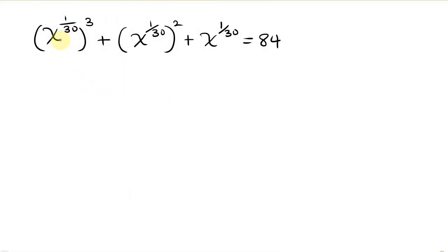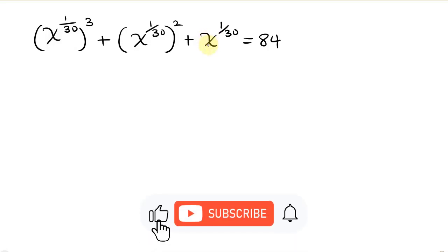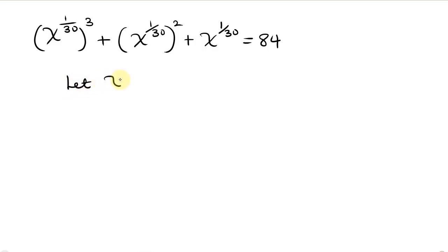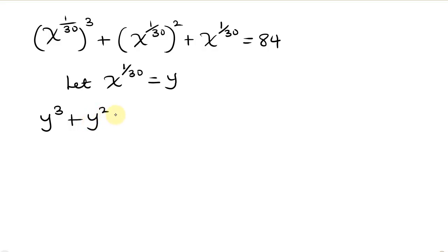Notice that we have x to the 1 over 30 all around. So our next step will be to substitute by letting x to the 1 over 30 equal y. That means whenever we see x to the 1 over 30, we put y there. So this expression becomes y cubed plus y squared plus y equal to 84.